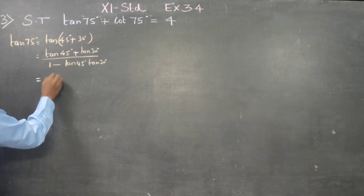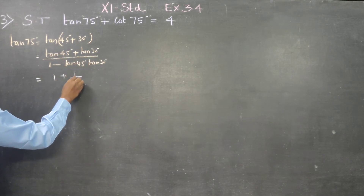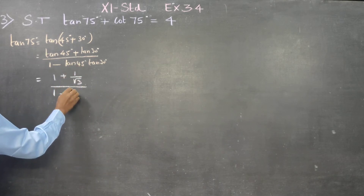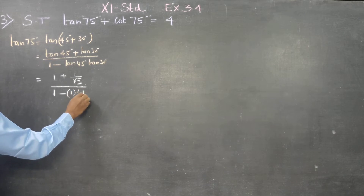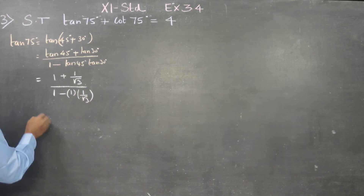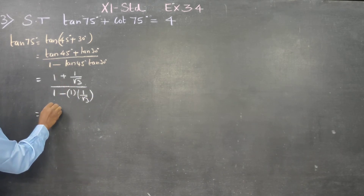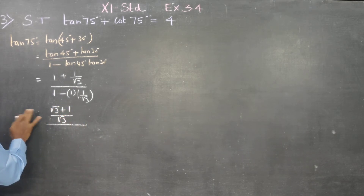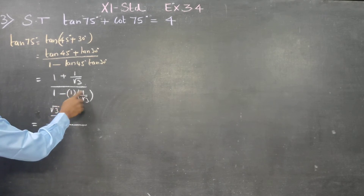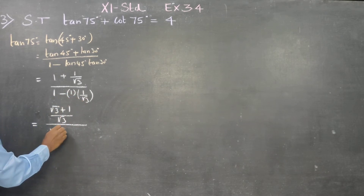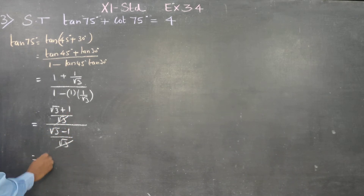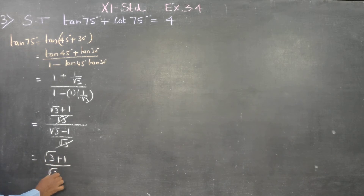Substituting: tan 45 is 1 and tan 30 is 1 over root 3. Taking LCM, the numerator becomes root 3 plus 1 over root 3, divided by root 3 minus 1 over root 3. The root 3 cancels, and therefore the answer is root 3 plus 1 over root 3 minus 1.